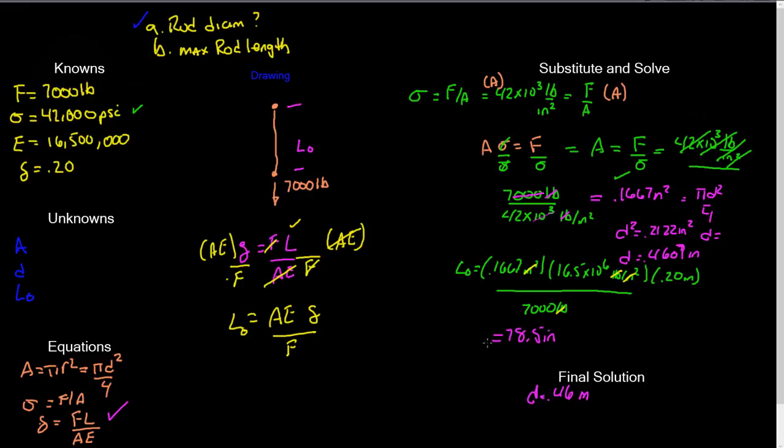Now they tell me to report that to the nearest inch. So I'm going to put that down as L sub 0 equals 79 inches. There's your solution for the second one. That's part B, the maximum rod length. So hopefully that helped. Hope you have a good night. Thanks.